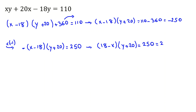If we prime factorize 250, it will be 2 times 5 squared times 5, which is 2 times 5 cubed. Now, if I want to write the divisors of 250, because y plus 20 is a positive integer and y is a positive integer, y plus 20 will be at least 21. So we only want divisors of 250 that are greater than 21.